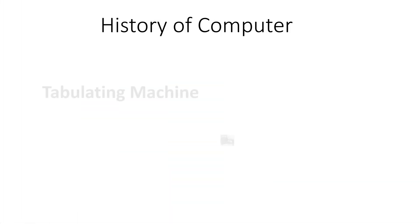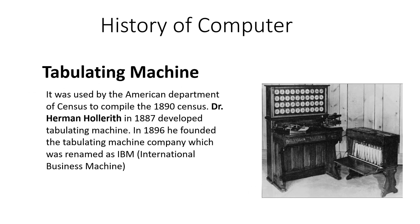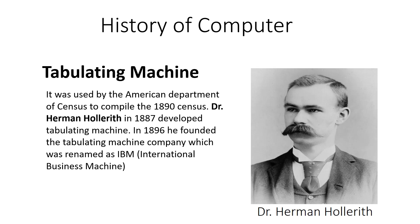Another device in the history of computing was the Tabulating Machine. The Tabulating Machine was a calculating device used by the American Department of Census to compile the 1890 census. Dr. Herman Hollerith in 1887 developed the Tabulating Machine, and later in 1896 he founded the Tabulating Machine Company, which was renamed as IBM — International Business Machines.